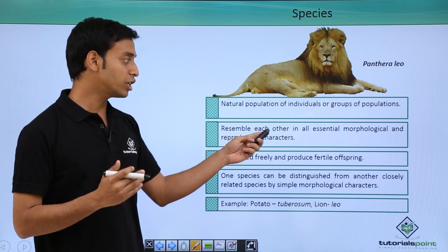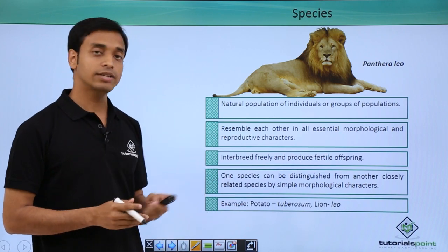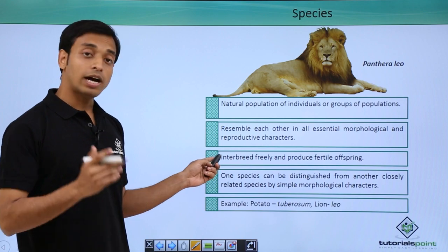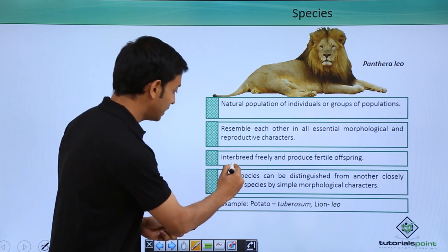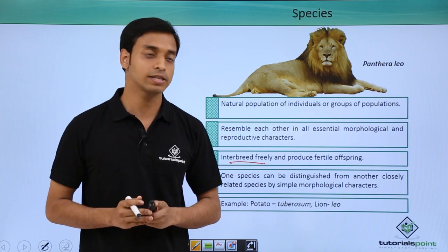This is very important to be noted. Another important point to be noted is that they can interbreed freely and can produce fertile offspring. These species can be distinguished from any other closely related species by simple morphological characteristics.